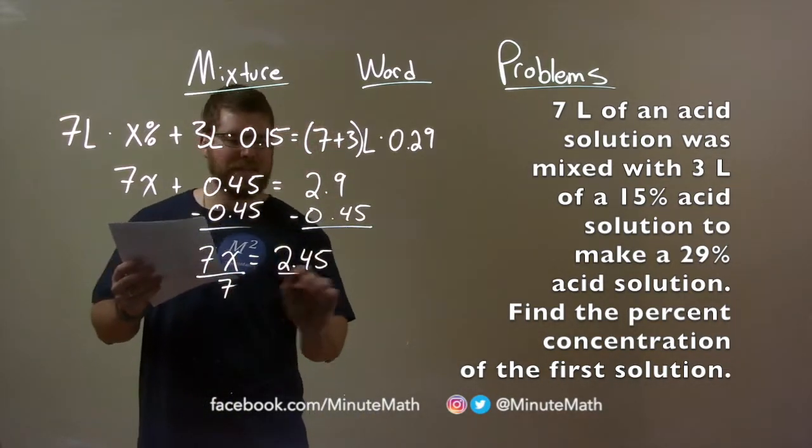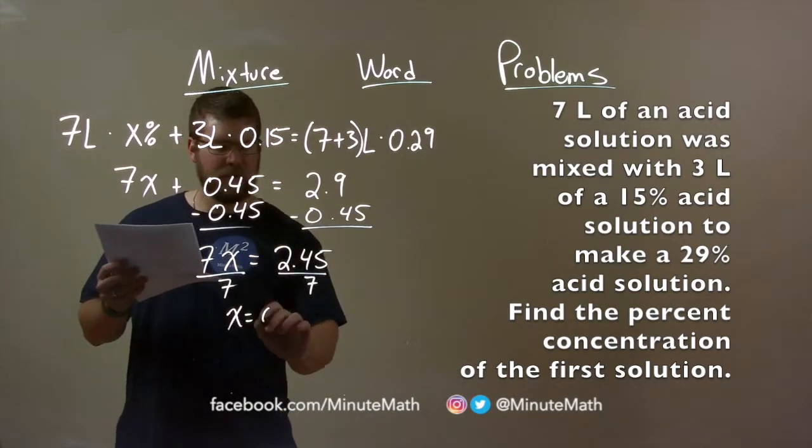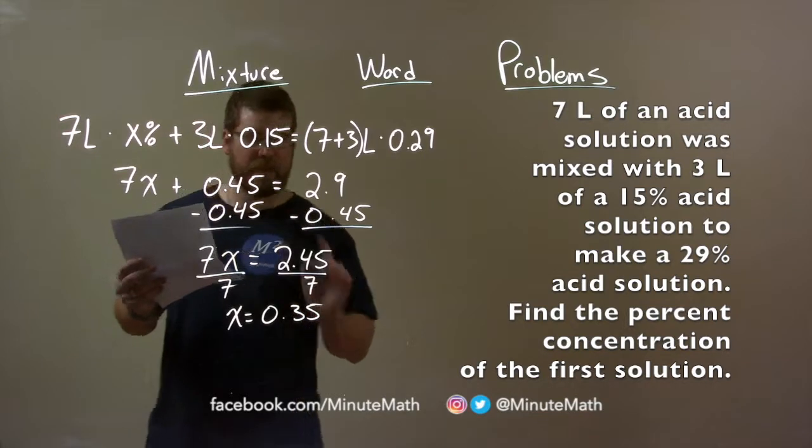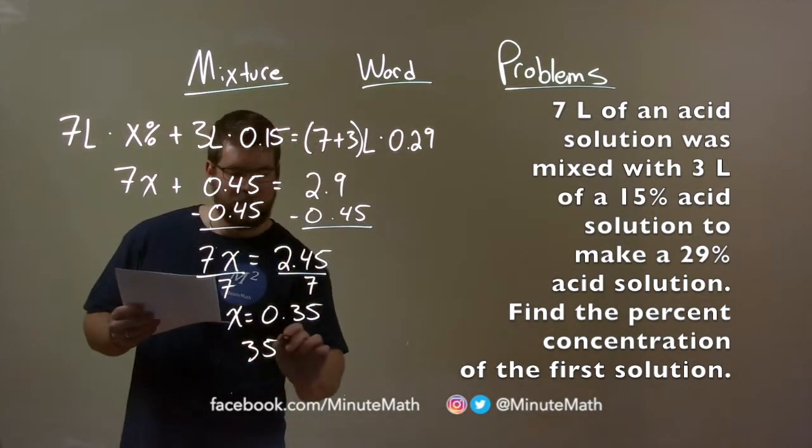Divide both sides by 7, we're going to get a decimal here of x equals 0.35, and that as a decimal is 35%.